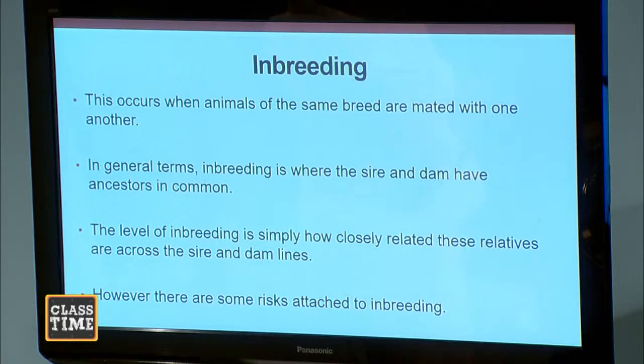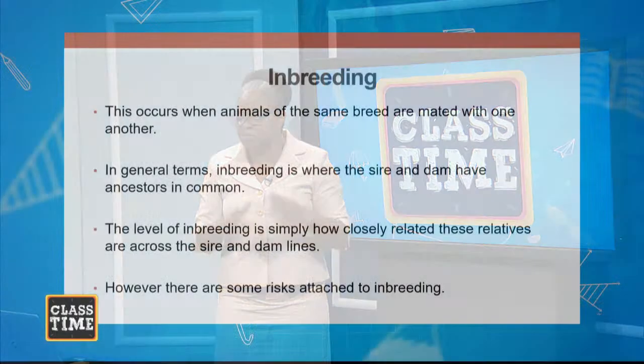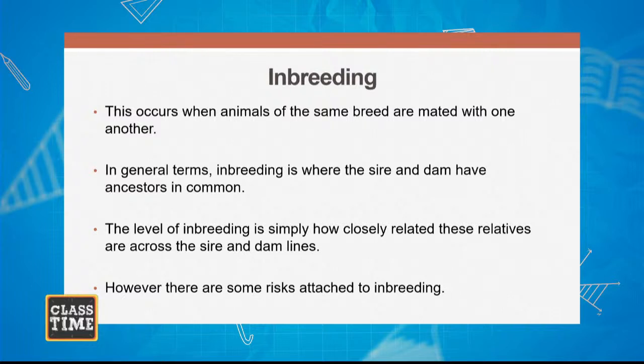I now want us to look at inbreeding. By definition, students, inbreeding occurs when animals of the same breed are mated together. In normal terms, this is when animals that are related are mated — so mother with son, father with daughter. In animals we call this inbreeding, and it is not good. Because most times when inbreeding takes place, there are some risks attached to this. The closer the relation, the more risk attached when we get the offspring from this type of breeding.